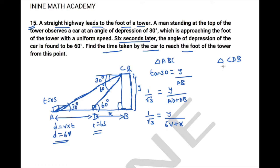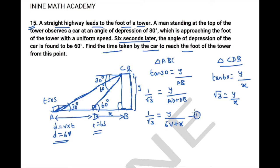Now moving on to triangle CDB: tan 60 = y / x, which gives √3 = y / x. Let us call this equation 2.